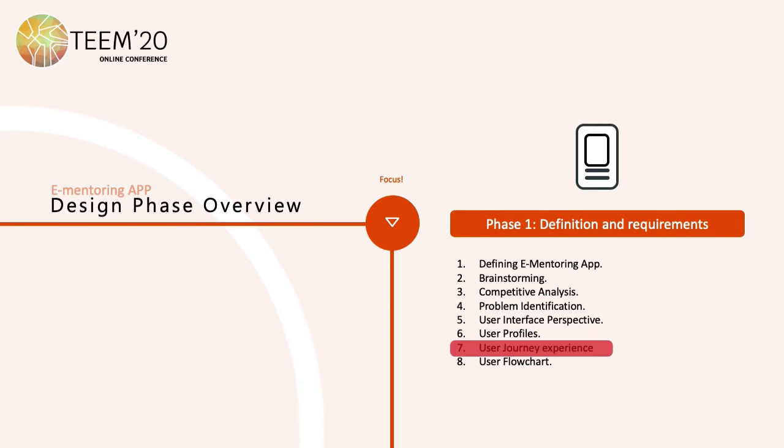Journal experience: we created a mentee's emotional experience searching for a mentor using the app. User flow chart: with the necessary steps to search mentoring information, the matching process with the mentors, user experience, and user profile creation, among others.